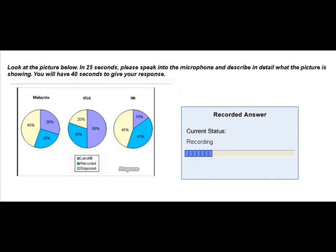These pie charts depict Malaysia, the United States of America, and the UK, and compare how much they have in landfill, recycled, or disposed.